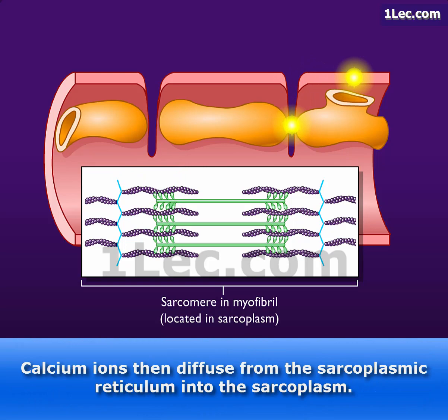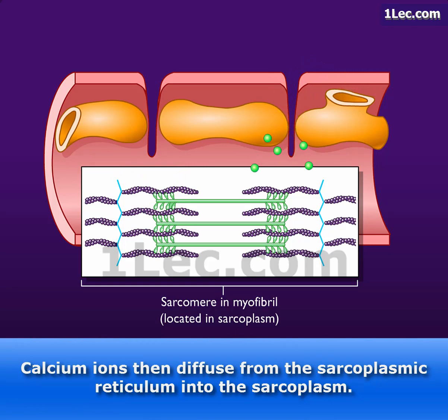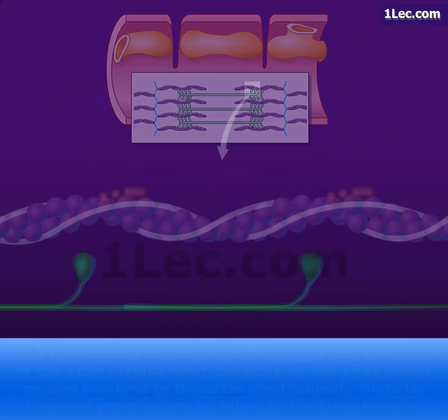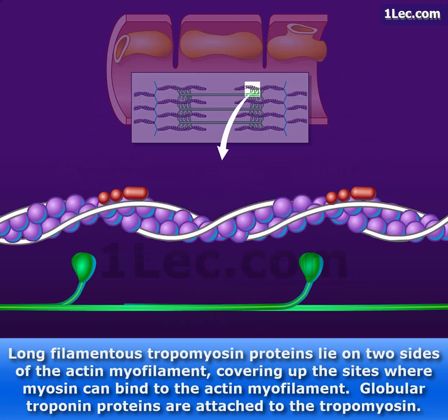Calcium ions then diffuse from the sarcoplasmic reticulum into the sarcoplasm. Long filamentous tropomyosin proteins lie on two sides of the actin myofilament, covering up the sites where myosin can bind to the actin myofilament.